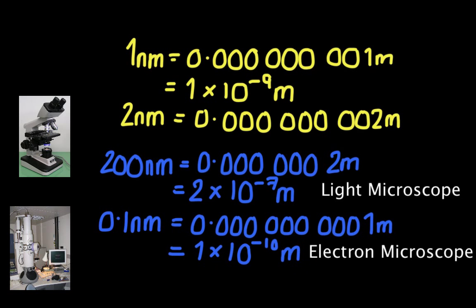So here, just playing with the units, you can see that 1 times 10 to the minus 10 metres is much smaller for our electron microscope, which has that much higher resolution because it can distinguish between two points that are much closer together than our light microscope that has a resolution of 200 nanometres.